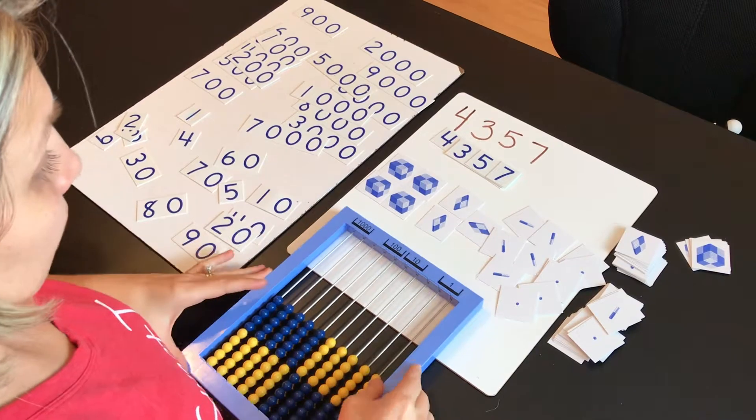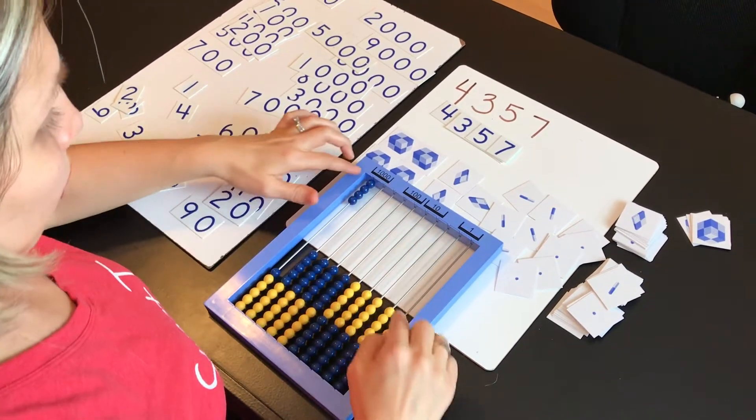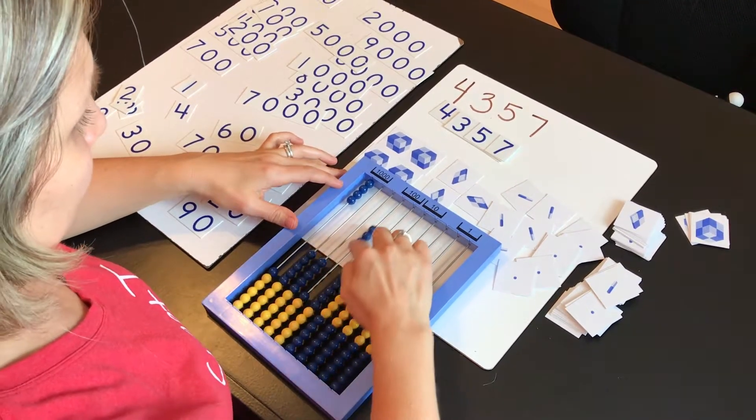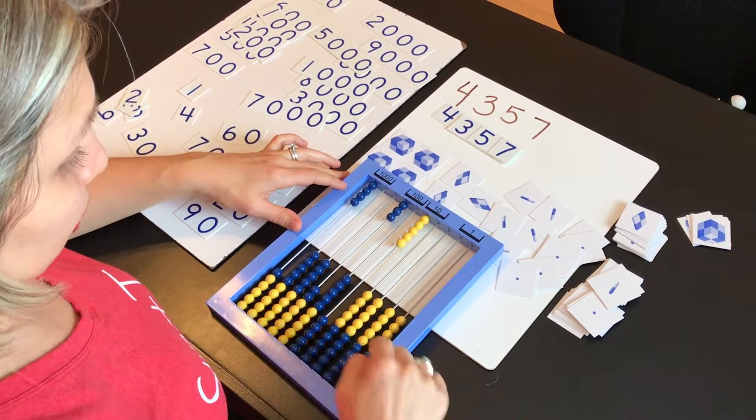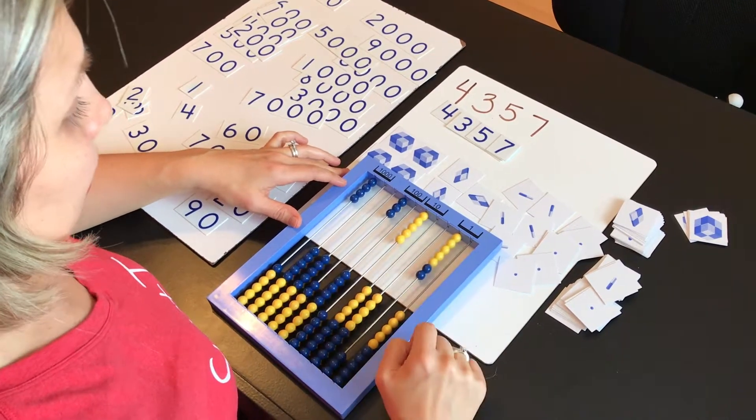And then using the abacus, she'd have 4,300, can easily grab 50 because of the color difference, and then again, seven.